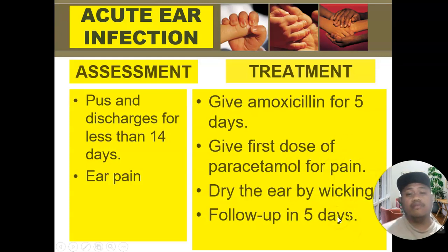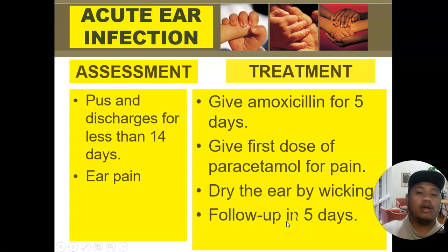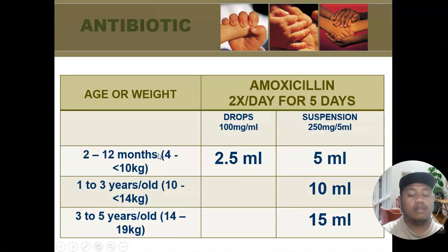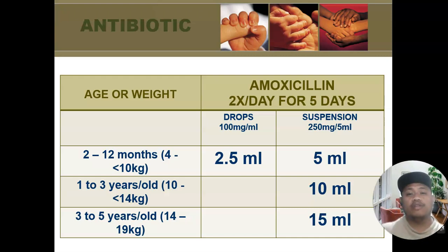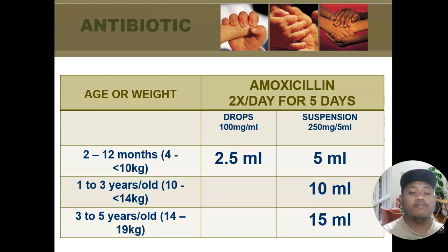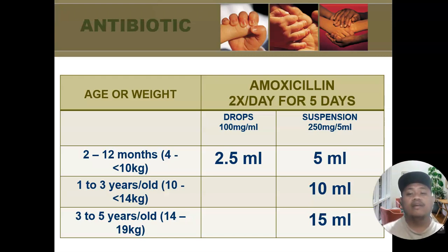The 5-day follow-up is set aside if there are other general danger signs, in which case the child must return to the clinic immediately. For amoxicillin dosing: age groups are 2–12 months, 1–3 years, and 3–5 years, corresponding to weights of 4–10 kg, 10–14 kg, and 14–19 kg. For suspension 250 mg per 5 ml, give 5, 10, and 15 ml respectively; for drops, 2.5 ml is available for 2–12 months only. Amoxicillin is given twice a day for 5 days.